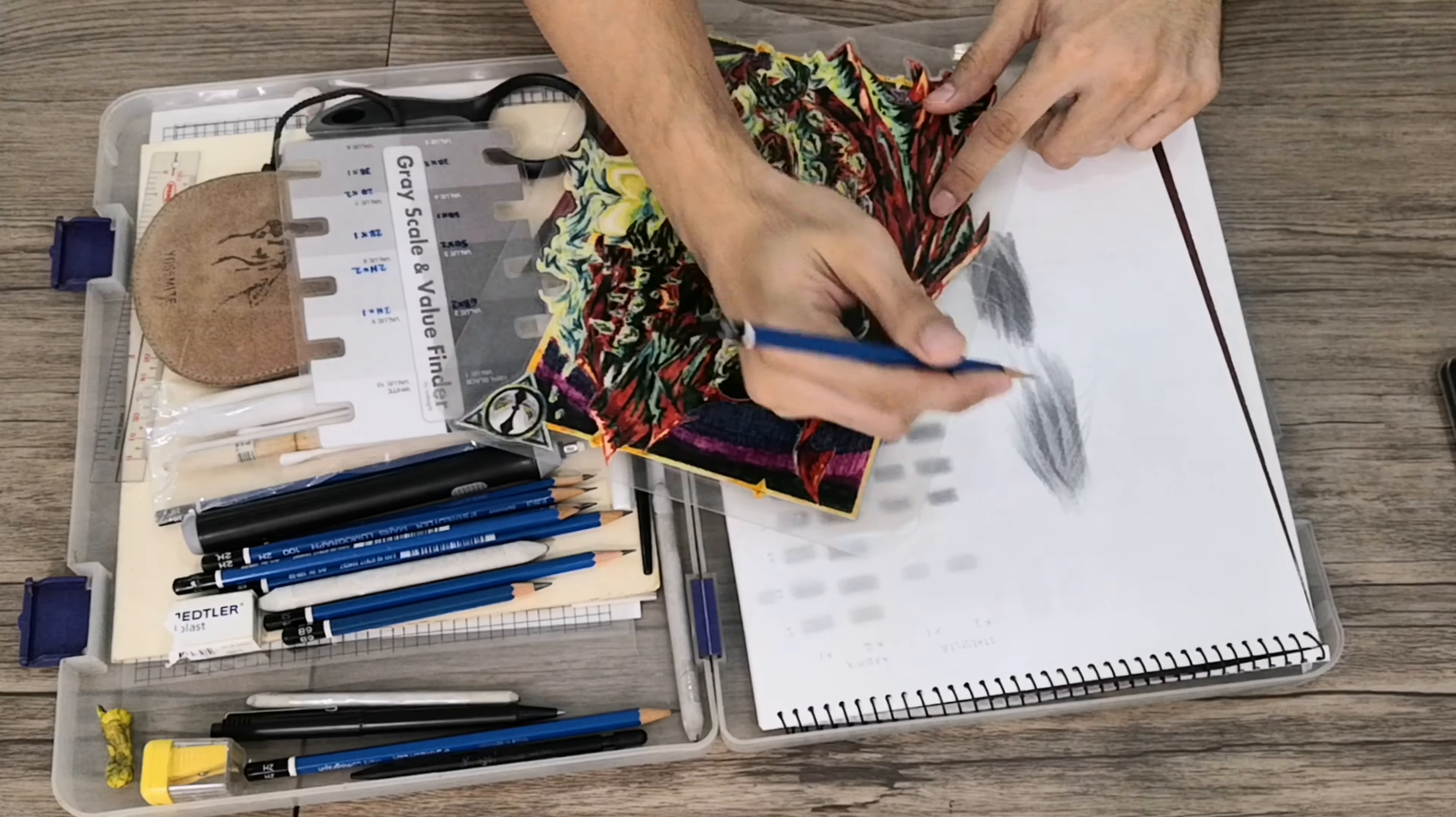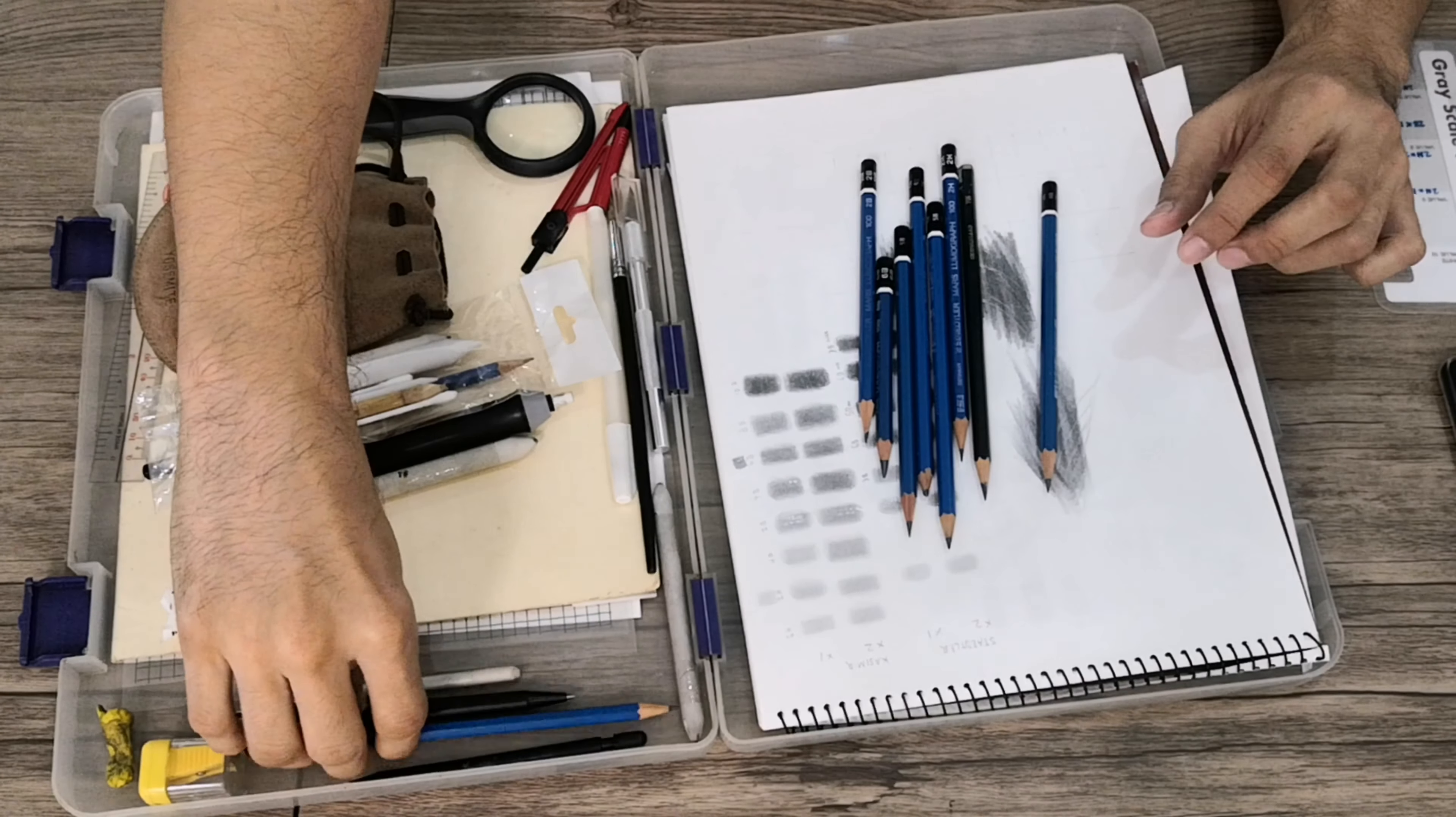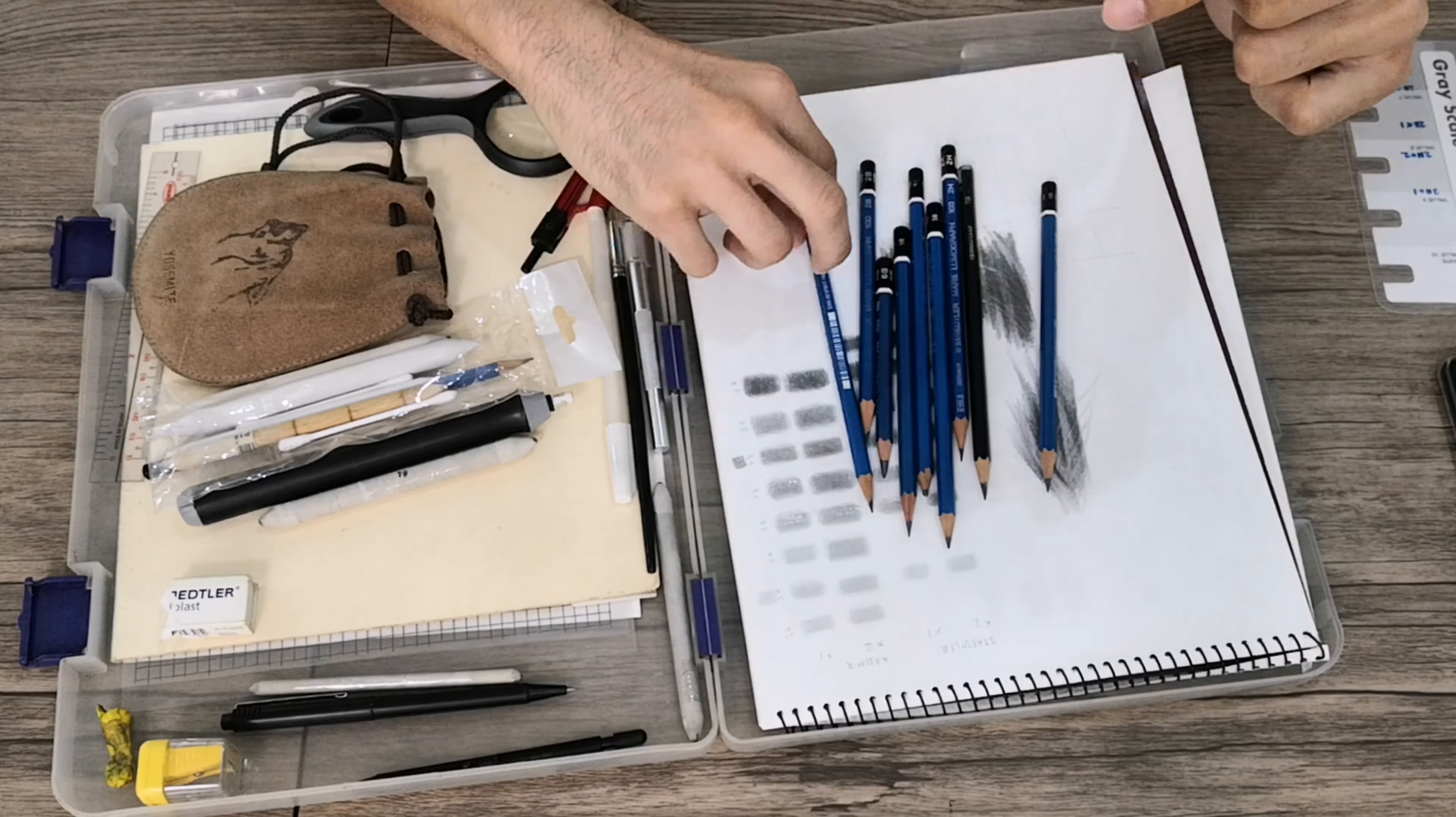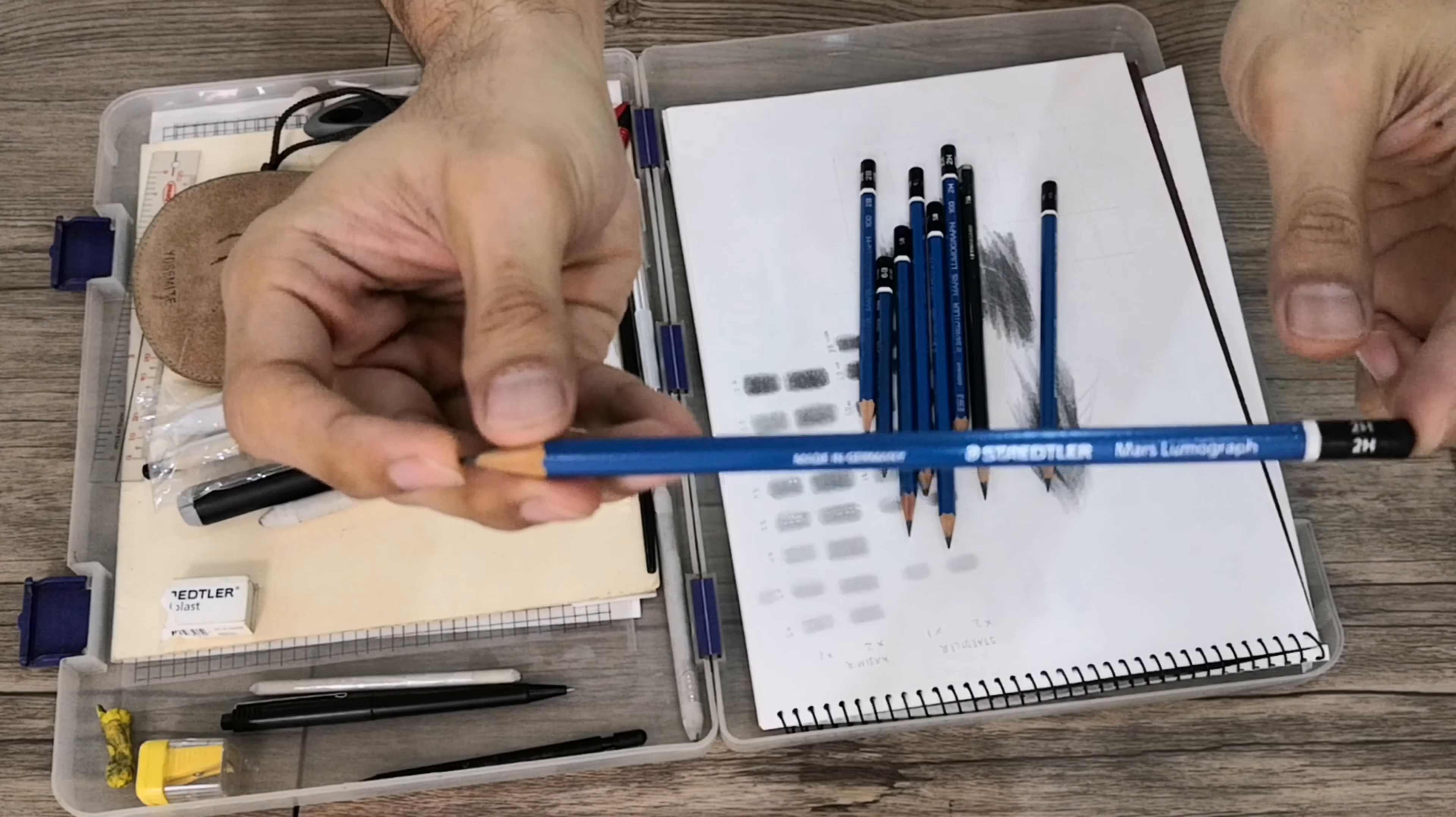Moving on, we have various pencils. I basically use a lot of types but mostly use four different types. The very first is the 2H. I use this 2H for doing the outlines or doing the grids. This brand Staedtler 2H is what I personally use for my outlines and my grids.